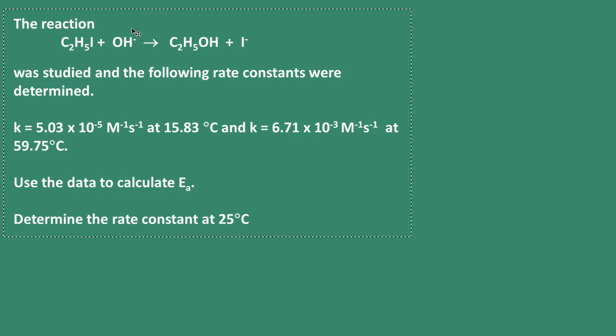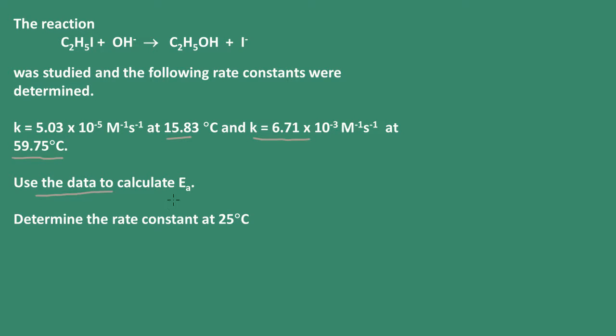Hi, this is Dr. O'Connor. Welcome to Pathways to Chemistry. In this problem, we're told that this reaction was studied and the following rate constants were determined. We have k equals 5.03 times 10 to the negative 5 per molar per second at 15.83 degrees Celsius, and another value of k at 59.75 degrees Celsius. We're asked to use the data to calculate the activation energy and then determine the rate constant at 25 degrees.